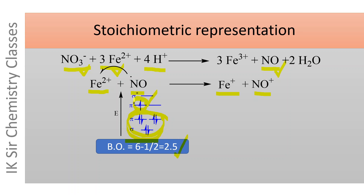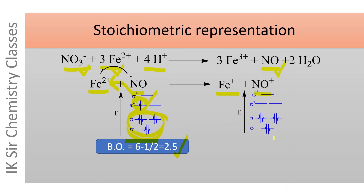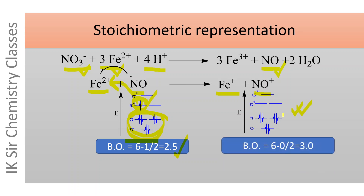If this anti-bonding electron is transferred to Fe2+ ion, NO+ is formed, whose partial molecular orbital energy level diagram is given here. The bond order is now (6 minus 0) divided by 2, which equals 3. The process of the NO molecule losing its unpaired electron to Fe2+ is energetically favorable because it leads to an increase in the nitrogen-oxygen bond order.